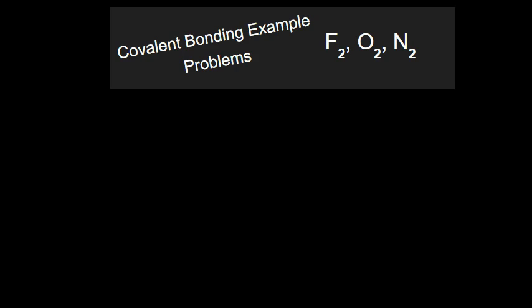Welcome back everyone. We've been talking about covalent bonding and what I would like to do now is to go over some example problems. If any of this seems confusing and you haven't seen my previous material on the background skills for covalent bonding, I would like you to take a look at a previous screencast. I'll put a link to that right now. If you don't want to do that, let's go ahead and take a look at some examples.